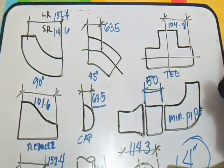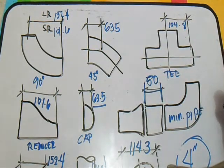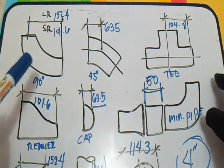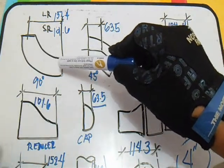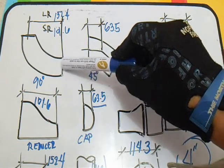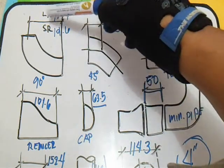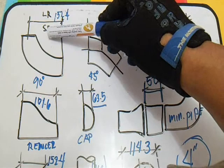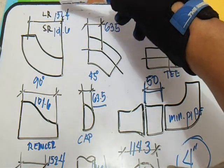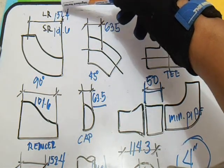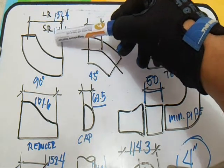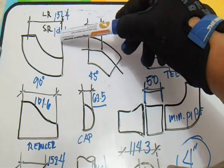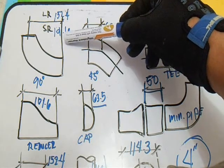Let me start with this 90 degrees elbow. For this 90 degrees elbow we have LR and SR. The LR is 152.4 for our takeoff, and for the SR is 101.6 for this short radius elbow.